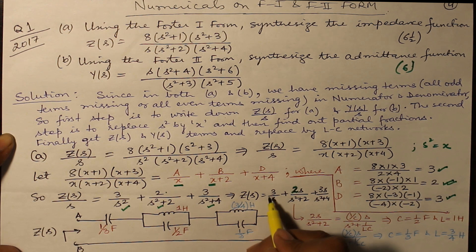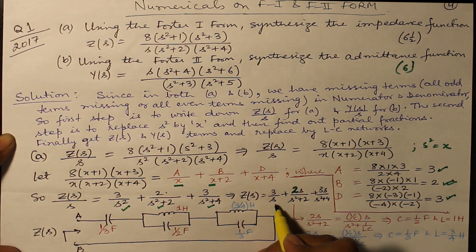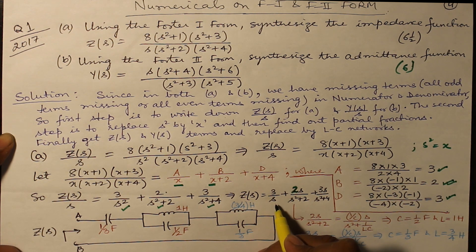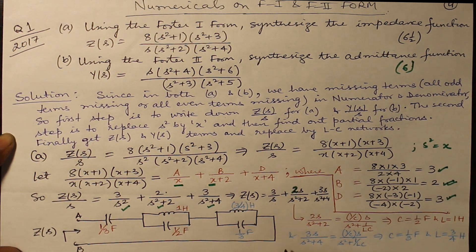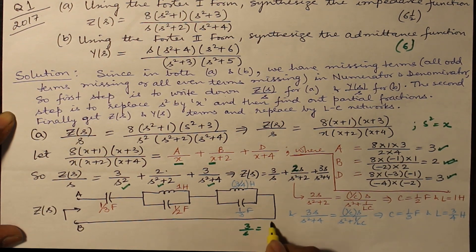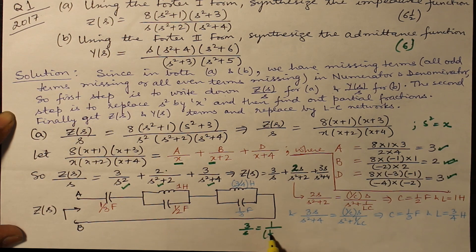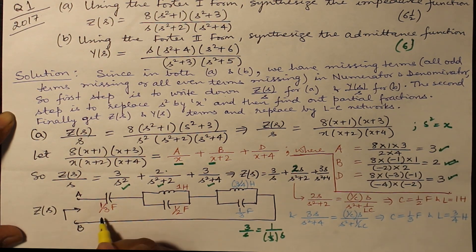Now in impedance form, 3/s represents what? The capacitor. Of how much value? 1/3 farad. Because 3/s can be written as 1 over (1/3)s. 1/sC, C is 1/3. So here 1/3.